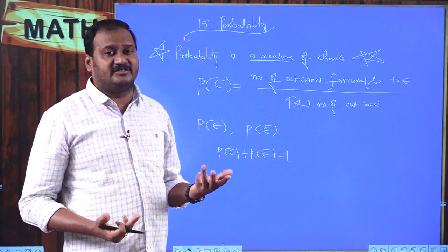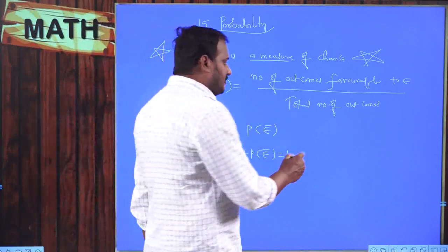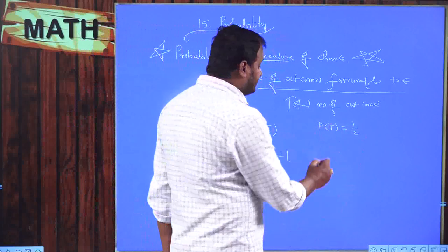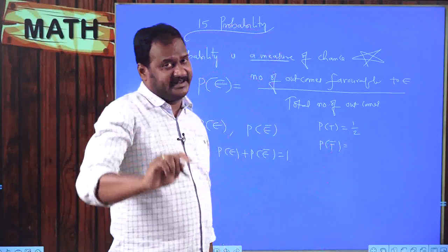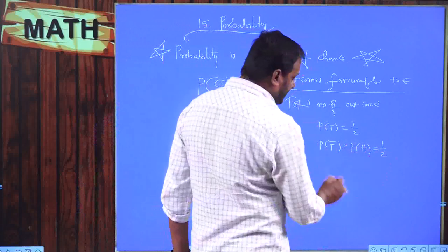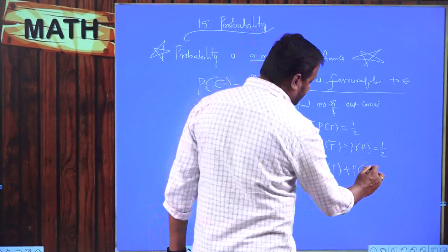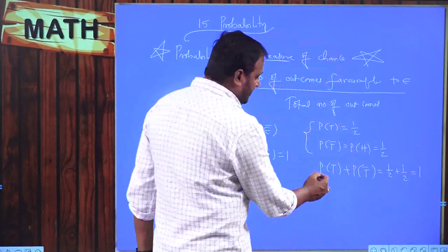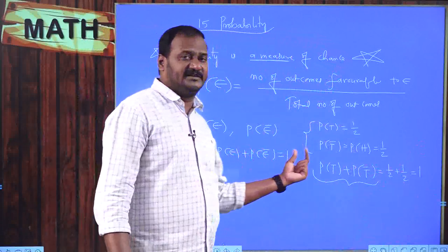How can I say it is always equal to 1? For example, taking a fair unbiased coin: probability of getting tails is 1/2, and probability of not getting tails — which is probability of getting heads — is also 1/2. When I add both: 1/2 + 1/2 = 1. So P(E) + P(E complement) = 1.